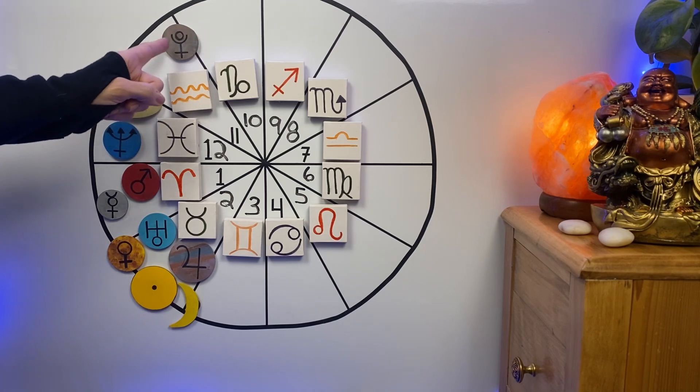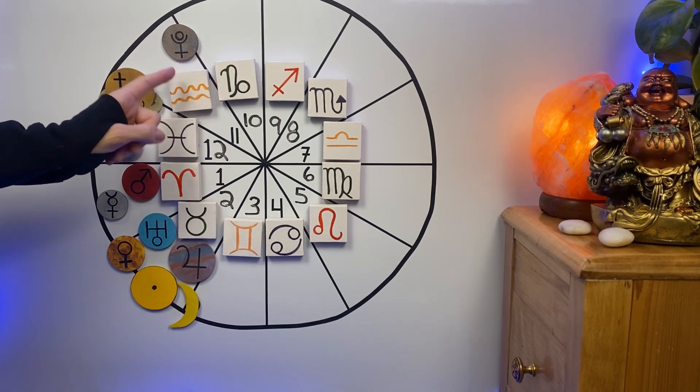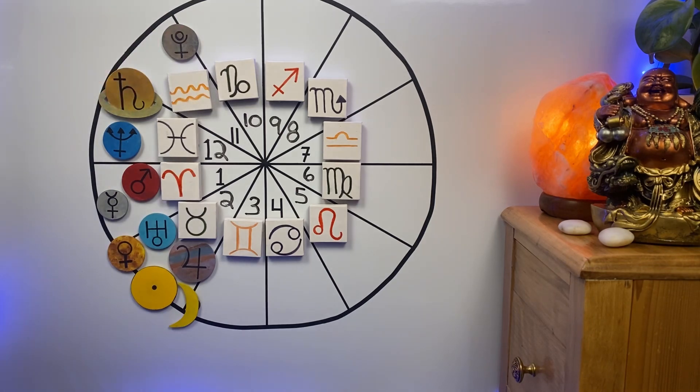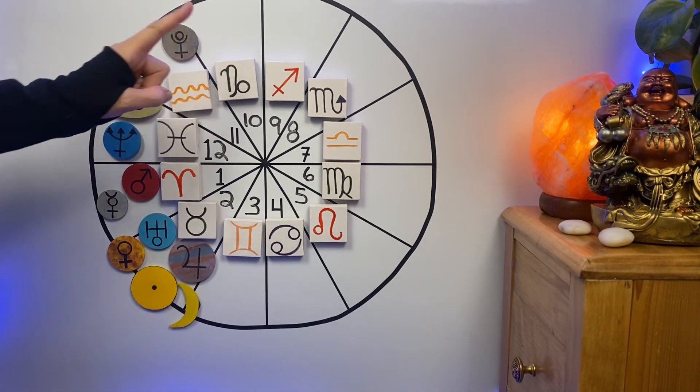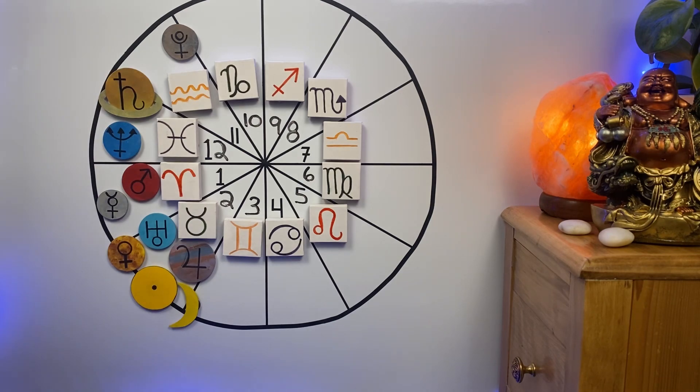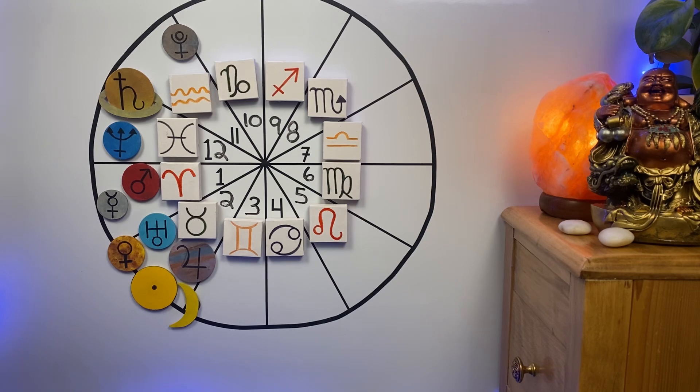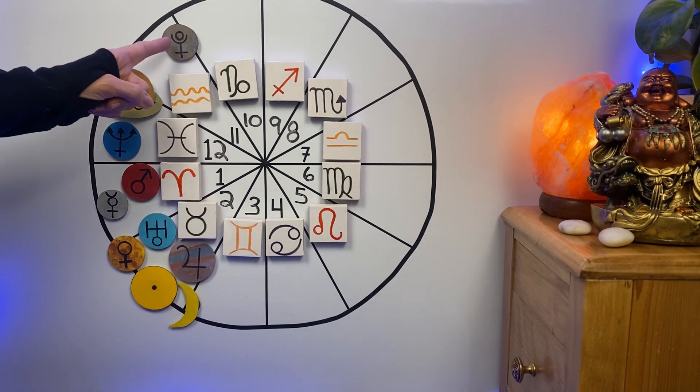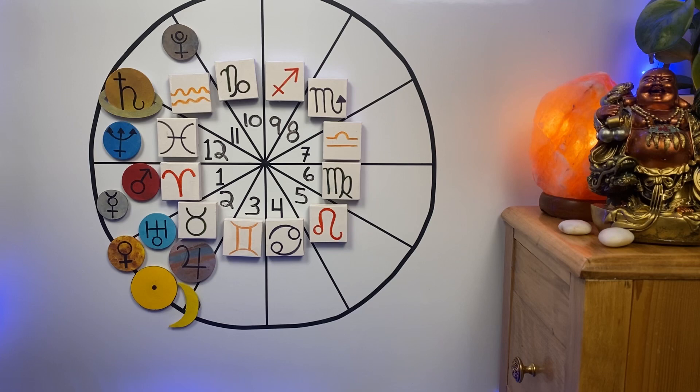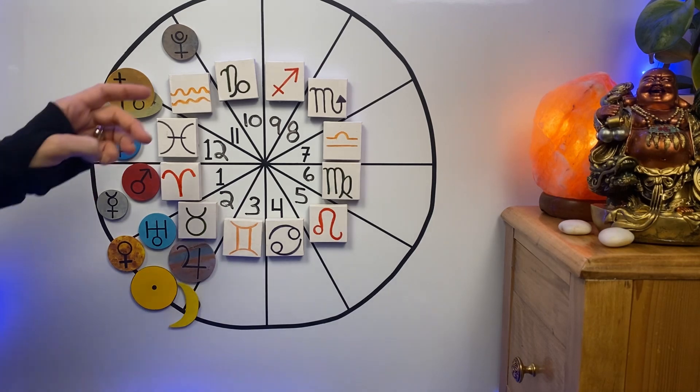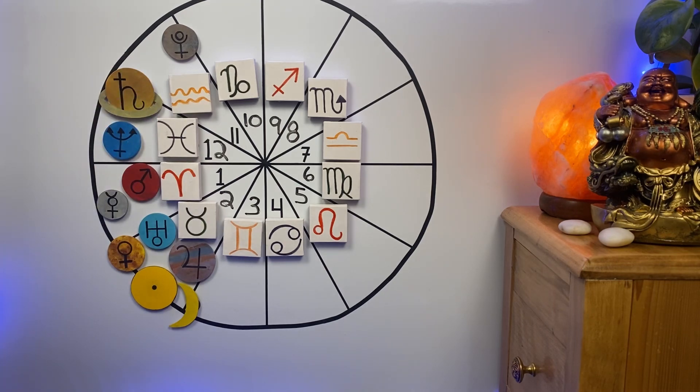Pluto has been hovering back and forth on the cusp between Capricorn and Aquarius for the past year, all part of this transit from Capricorn to Aquarius, wrapping up 16 years in Capricorn, heading into 20 years in Aquarius. I did do a video all about that and I think I will link it in the description. We'll retrograde all the way back into Capricorn for September, October, November, and then come back into Aquarius for good towards the end of November.